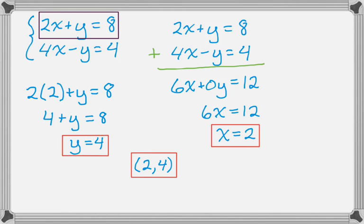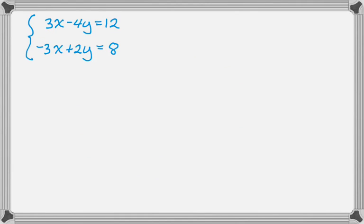Let's look at one more example. Say we have 3x minus 4y equals 12, and negative 3x plus 2y equals 8.